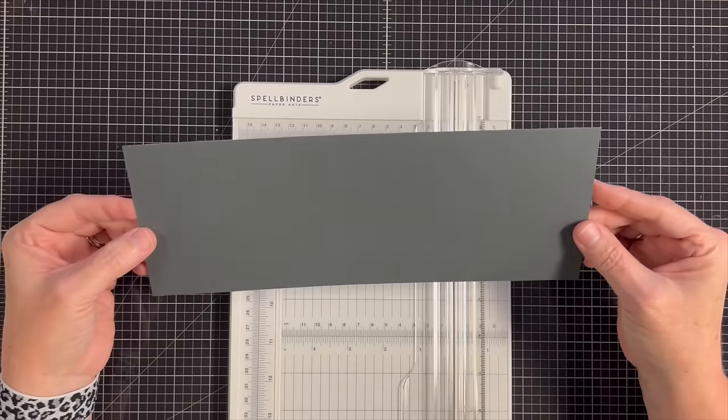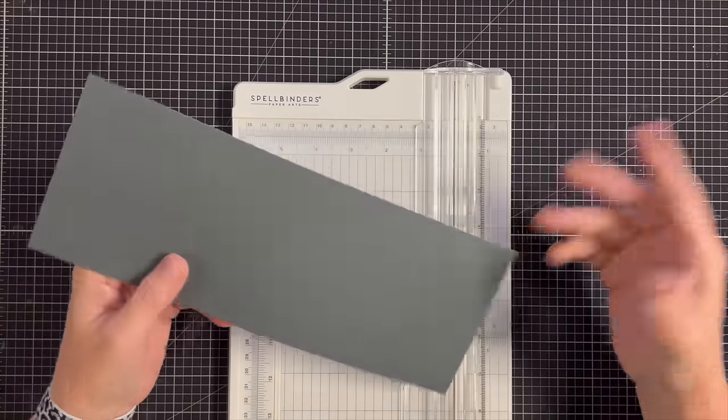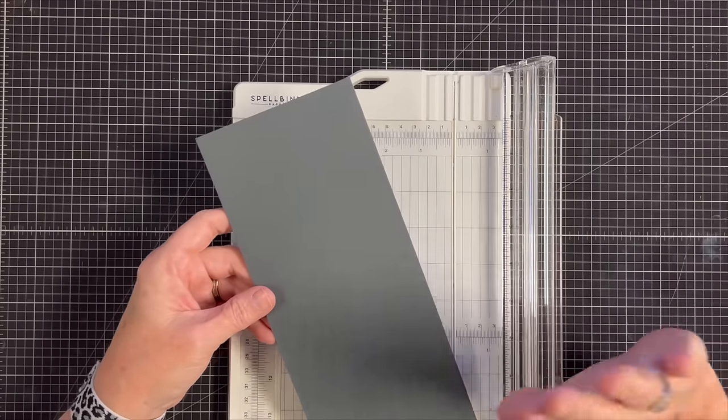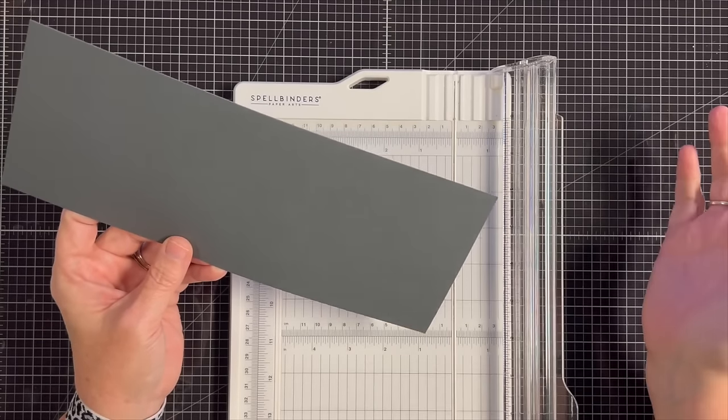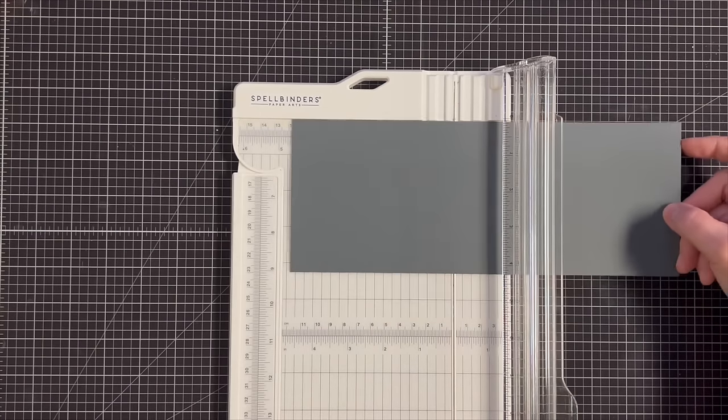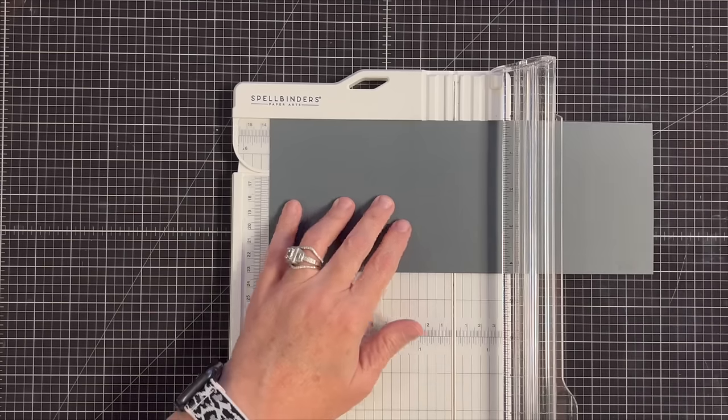To start with, you need a piece of cardstock that is four and a quarter by 11. This is just standard cardstock size, and I'm going to do this a little different than the original one that I did. For whatever reason, in my original one, I cut off half an inch. There's really no need to do that. The first thing I'm going to do is put this into my trimmer, and I'm going to score it at five and a quarter.